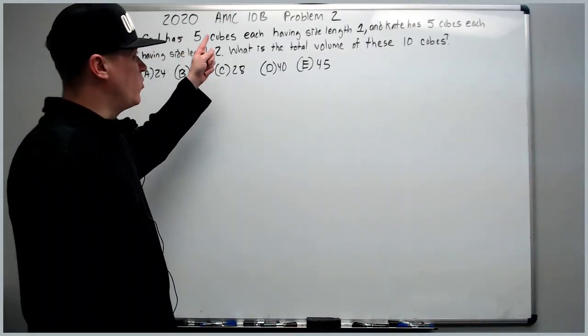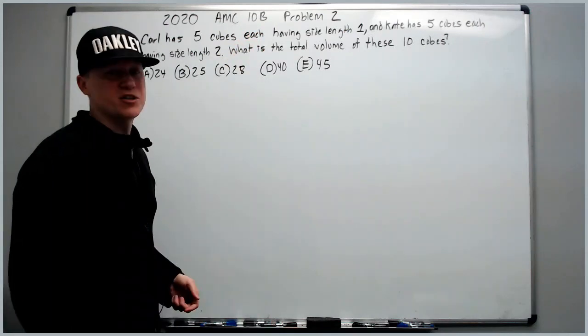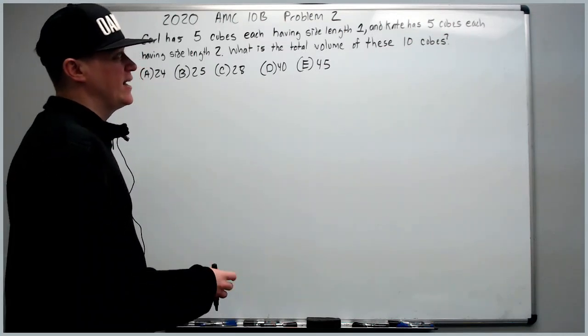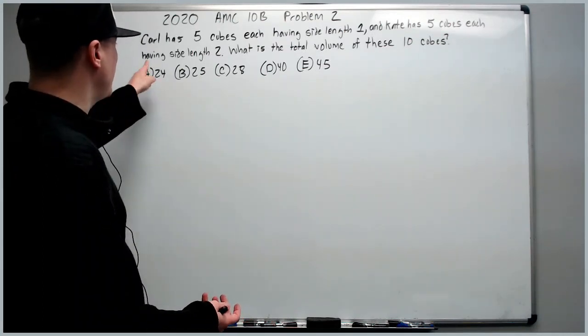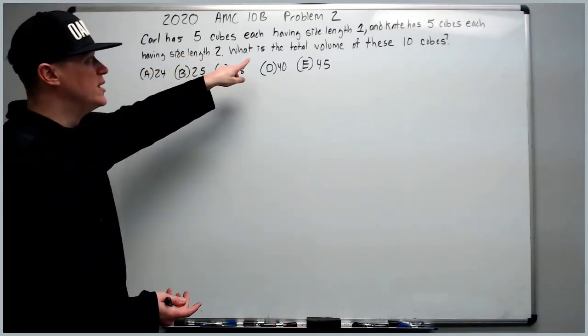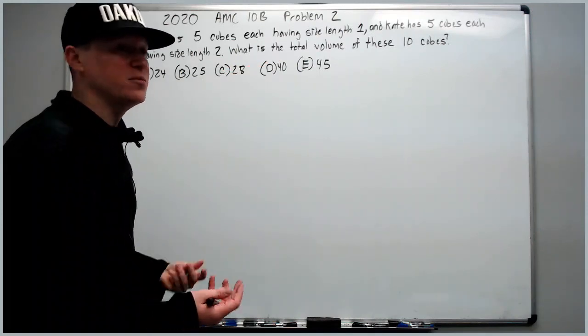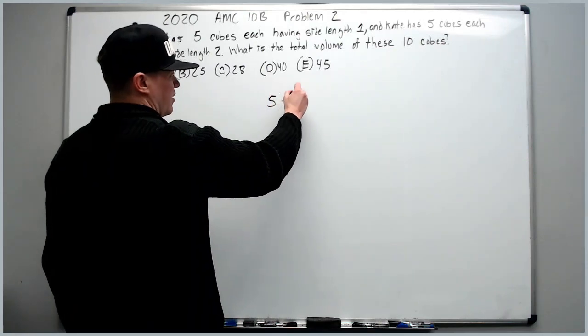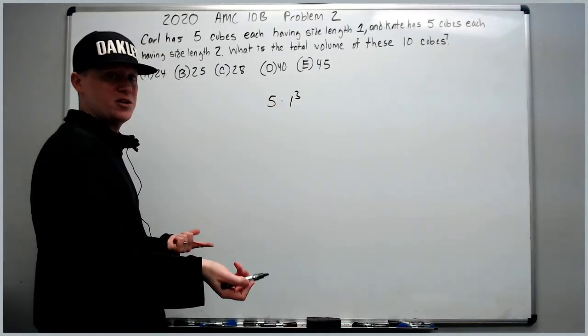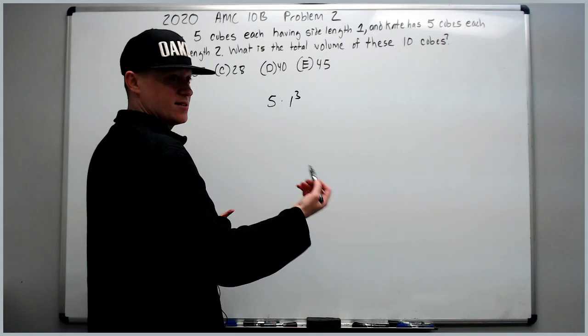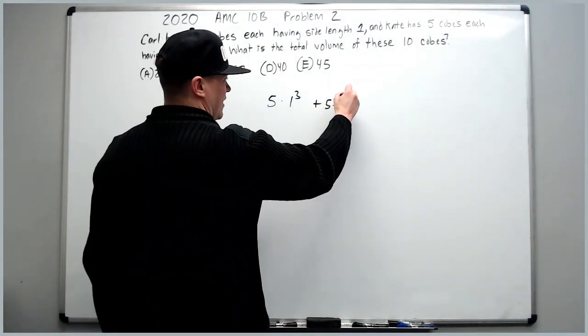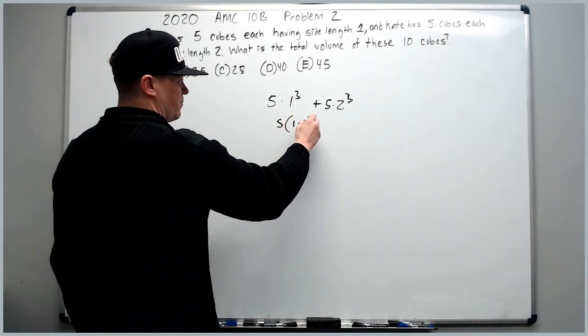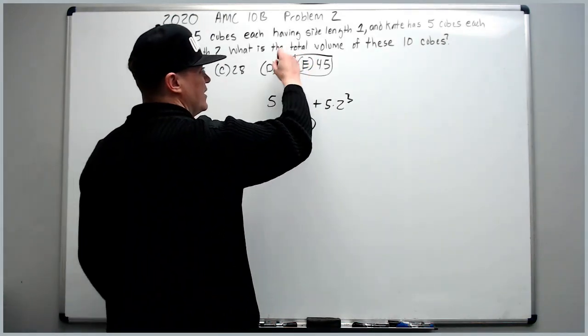Continuing on to the 2020 10B problem number two. Carl has five cubes each having side length 1 and Kate has five cubes each having side length 2. What is the total volume of these 10 cubes? Well, it's basically five times Carl's volume, which is literally one cubed. That's why it's called cube because it's the volume of a cube, plus five times 2 cubed. You can factor out the five and get 1 plus 8, 9 times 5 is 45.